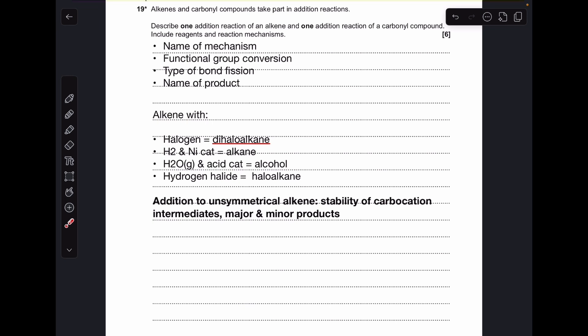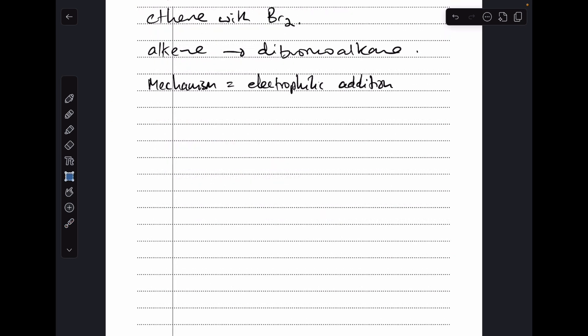If we choose an unsymmetrical alkene, so something like propene, we would then have to talk about the stability of the carbocation intermediates and the major and minor products. So the one I've gone for, straightforward ethene with bromine, there's no need to over complicate it if you don't need to. So ethene with bromine, that's an alkene to dibromoalkane, and the mechanism is electrophilic addition.